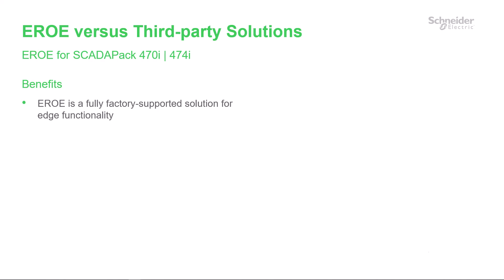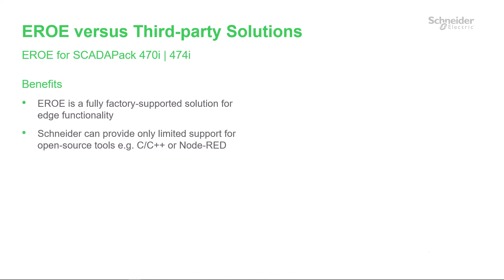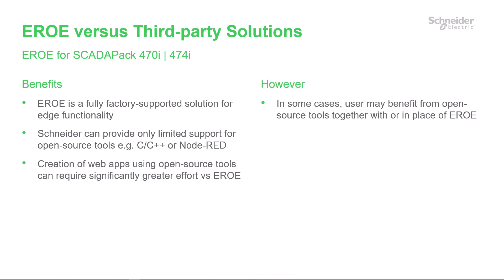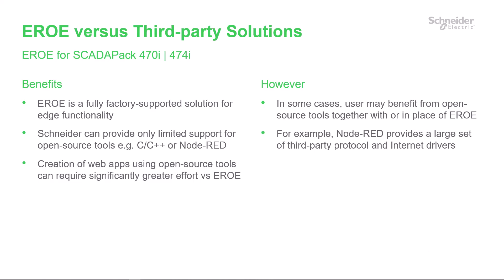Now a quick look at Aero versus third-party solutions. Aero is a fully factory-supported solution for edge functionality, while Schneider provides limited support for open-source tools such as C, C++, or Node-RED. Creating web applications using open-source tools can require significantly greater effort compared to developing with Aero. However, in some cases your project may benefit from open-source tools together with or in place of Aero. For example, Node-RED provides its own large set of third-party protocol and internet drivers, and those already familiar with Node-RED might prefer to continue using it.